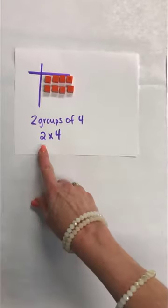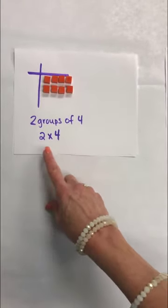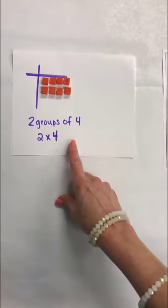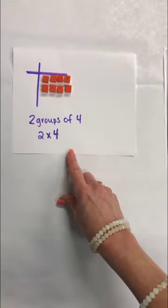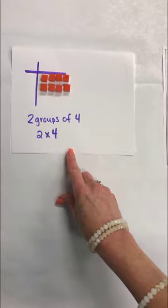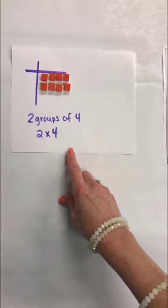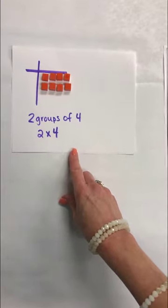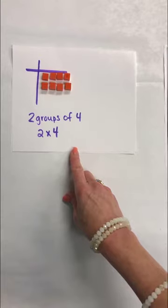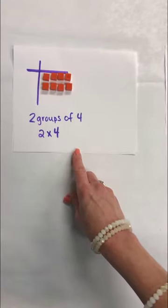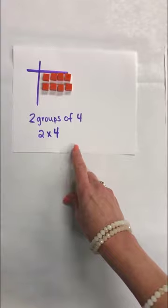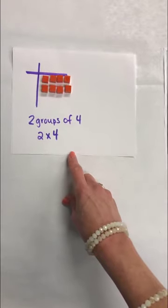So if we look at this model we see that 2 times 4 is thought of as two groups of four. Students also learned that arrays make squares or rectangles and we want to carry this over into our fourth grade learning because it lays the foundation for fifth graders when they learn multiplication and division of decimals and fractions.